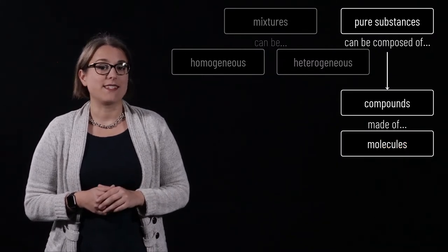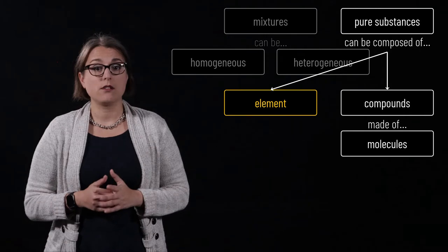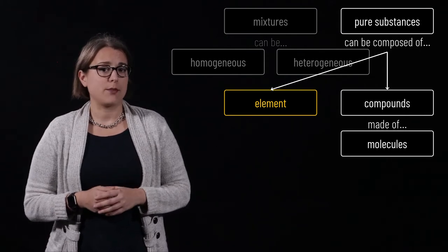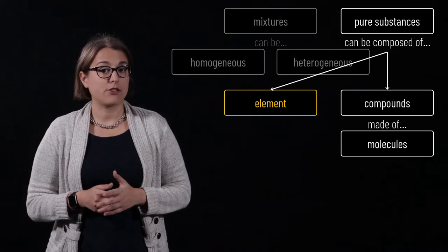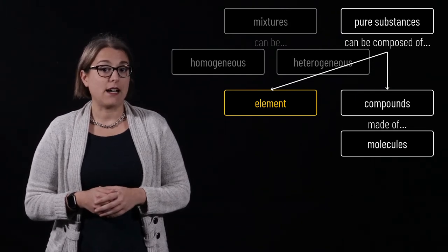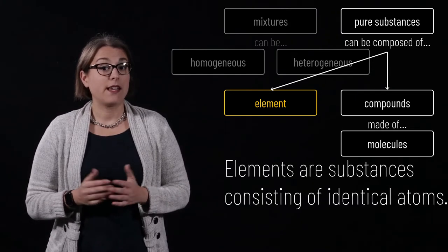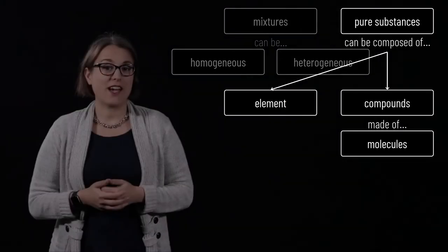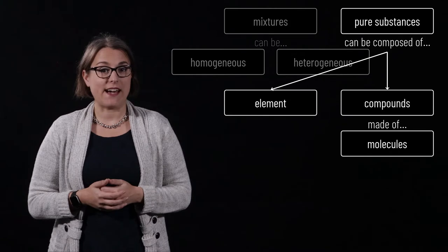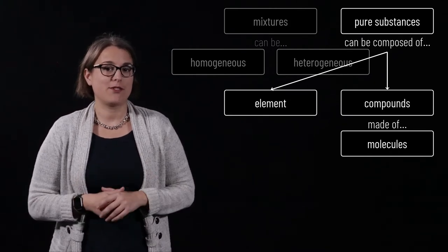Another type of pure substance is an element. Gold, aluminum, and lead are examples of solid elements. Mercury is a liquid element. Oxygen, nitrogen, and neon are all gaseous elements. An element is a substance that consists of identical atoms. Every solid, liquid, gas, and plasma is composed of atoms.